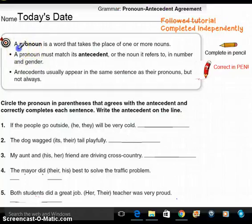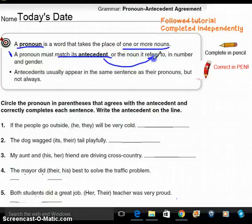Our targets are able to identify and use correctly. Remember, a pronoun is a word that takes the place of one or more nouns. It's the pronoun. Anywhere the noun can go, the pronoun can go. Our next target here is a pronoun must match its antecedent or the noun it refers to, in number and gender. So if I'm talking about my aunt, I can't say he. If I'm talking about my brother, I can't say she.